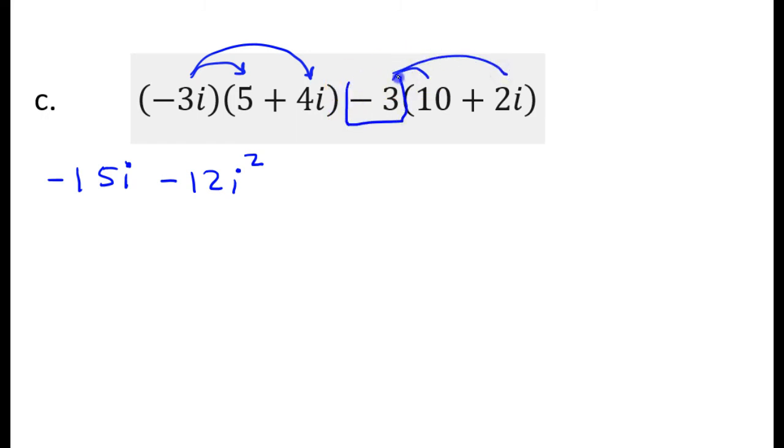Please include the negative sign when you do your distributive property. So that's going to be negative 30 minus 6i, because negative 3 times 2. Now I've got an i squared there. So that's going to turn this into a positive 12. So I've got negative 15i plus 12 minus 30 minus 6i.